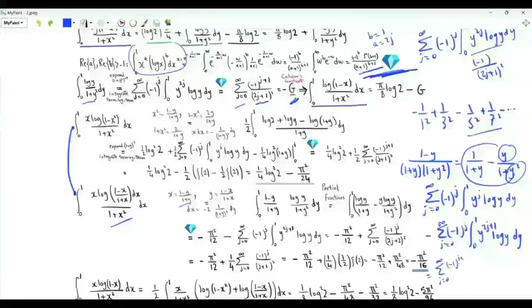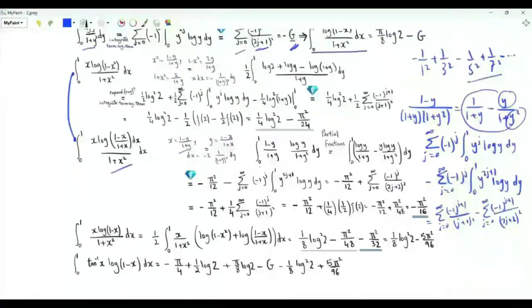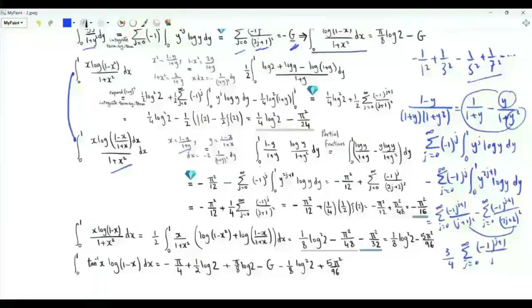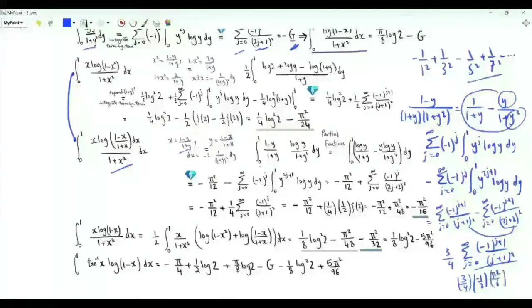Employing the general result, we get the sum over j of (minus 1)^j times the integral from 0 to 1 of y^j log y, minus the sum over j of (minus 1)^j times the integral from 0 to 1 of y^(2j+1) log y. This gives the sum of (minus 1)^(j+1) over (j+1)² minus the sum of (minus 1)^(j+1) over (2j+2)². Taking 2 as a common factor and combining the sums, we have three-fourths times the sum, which equals minus zeta(2) over 2. So the result is three-fourths times minus one-half times pi squared over 6, giving minus pi squared over 16.